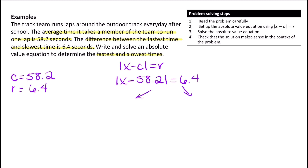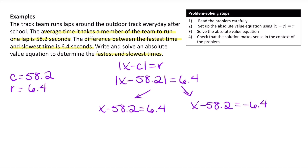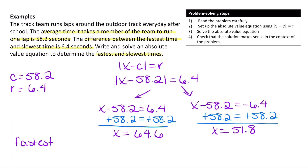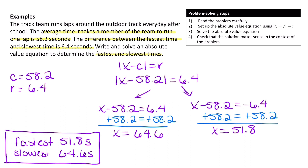We separate into two equations: X minus 58.2 equals 6.4, and X minus 58.2 equals negative 6.4. Adding 58.2 to both sides gives X equals 6.4 plus 58.2, which is 64.6. On the other side, adding 58.2 gives X equals negative 6.4 plus 58.2, which is 51.8. So the fastest time is 51.8 seconds and the slowest time is 64.6 seconds — pretty reasonable values, so we know everything was solved correctly.